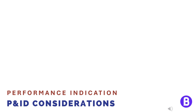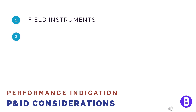This can be done either through field instruments such as pressure or temperature gauges, for example, or it can be done through instruments sending indications to DCS, meaning that the operator can read them from the control room.